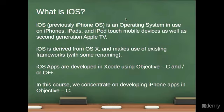First of all, what is iOS? iOS, who was previously called iPhone OS, is an operating system that is used on iPhones, iPads, and iPod touch mobile devices, and it's also used on the second generation Apple TV. It's derived from OS X and makes use of some of the existing frameworks in OS X. Basically iOS is a version of OS X made to run on touch devices.